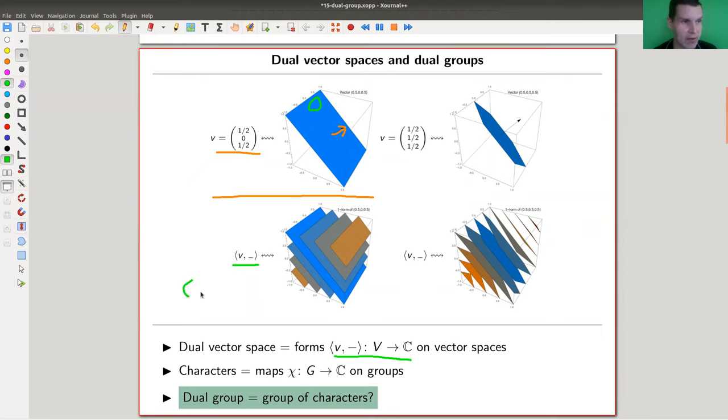You can also think of this as being a transposed vector. In this case, it's one over two, zero, one over two, because you can multiply a transposed vector by your favorite question mark vector, and you get a number. So a dual vector space is nothing else than the vector space of normals to your given vector or forms on the vector space.